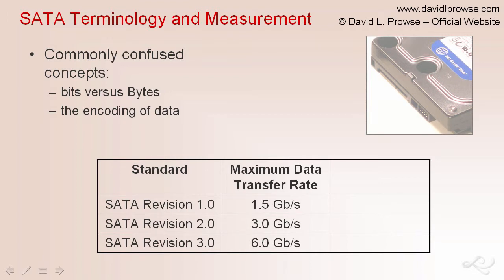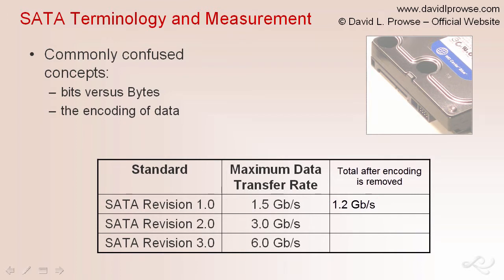The total throughput of SATA 1.0 is 1.5 gigabits per second, as shown in the table. Only a small portion of that is encoding data. When you remove the encoding data, you're left with 1.2 gigabits of real data — so it goes from 1.5 down to 1.2. A person reading the book might think the 1.2 gigabits is the encoding data, but that's not correct. It's actually only 0.3 gigabits per second of encoding data.